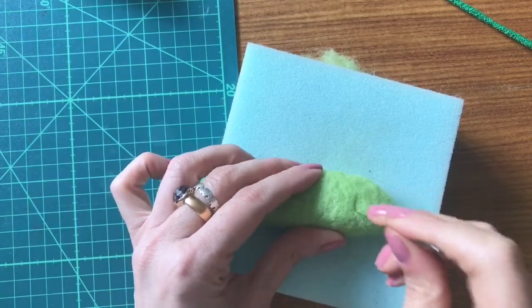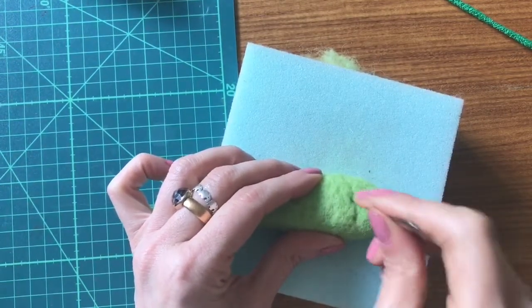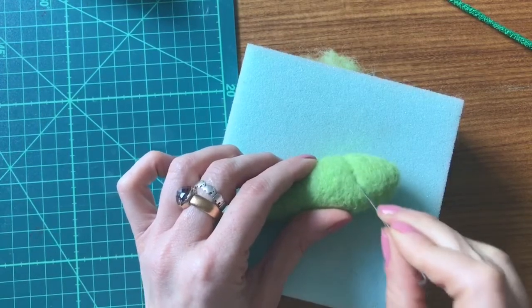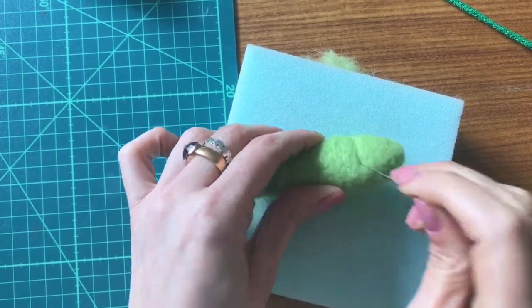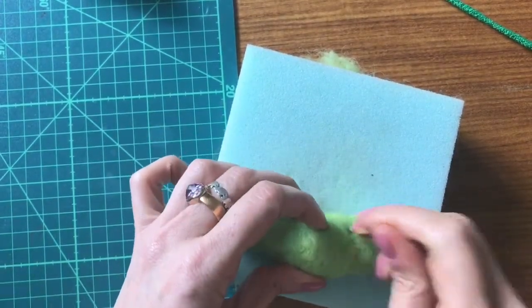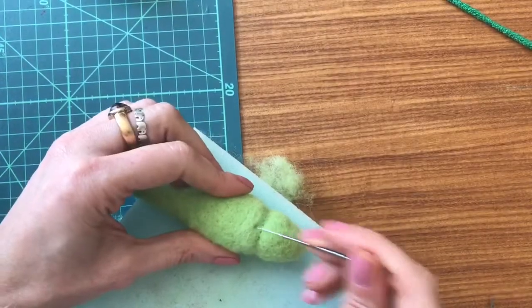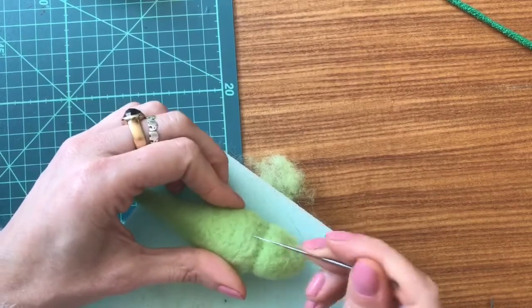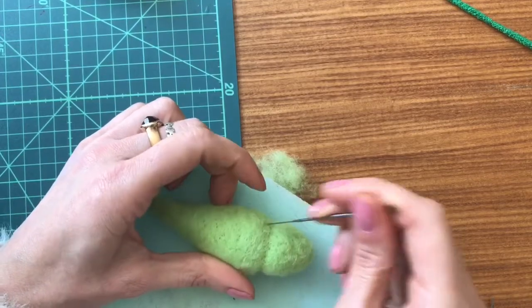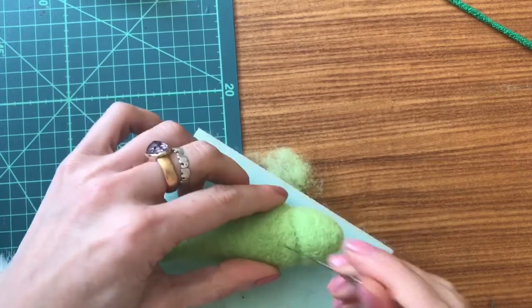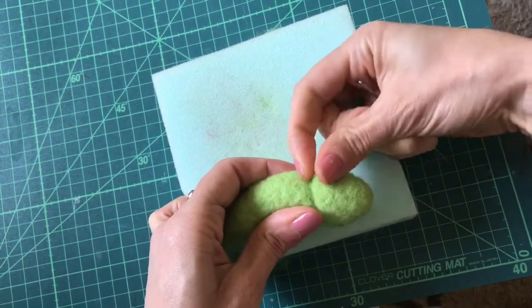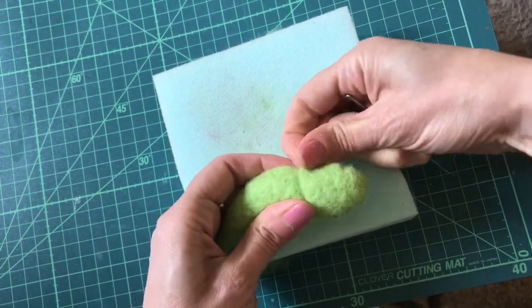You want to needle felt the head detail in, going all the way around. Needle felt back a little bit just to help create the shape so it tapers out onto the body. For the top of the head, use your fingers to help raise that bit up a little, keeping the head thick.